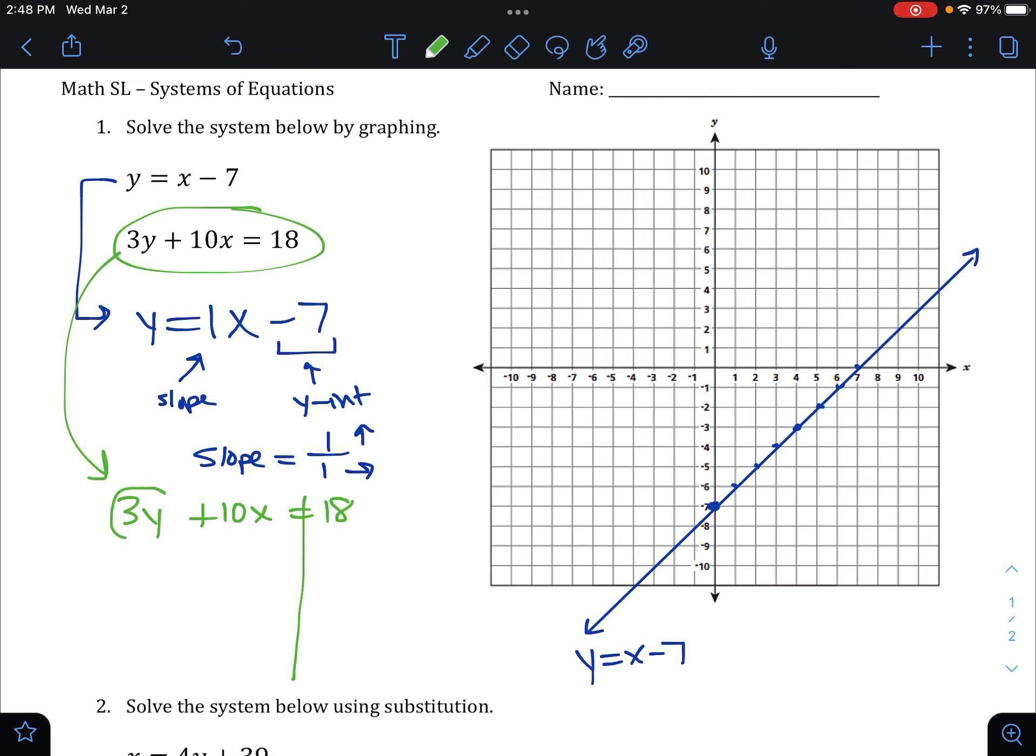And then we're going to divide everything by the 3 in front of the y. That way we get just y. One y, which is y. 18 divided by 3 would be 6. And we're going to leave it as negative 10 thirds x.